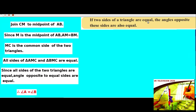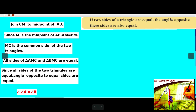If two sides of a triangle are equal, the angles opposite to these sides are also equal. One triangle has two sides equal, and the angles opposite to these sides are also equal.